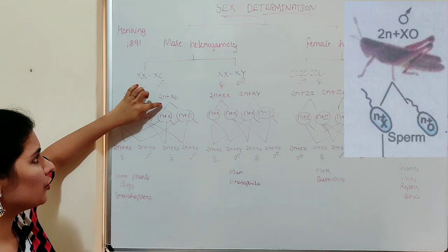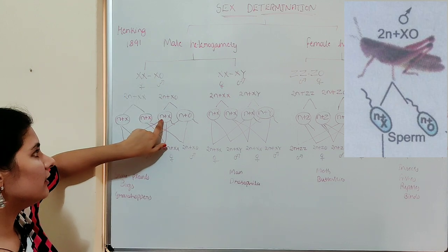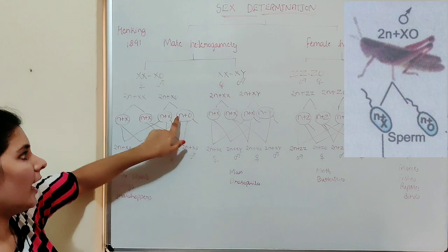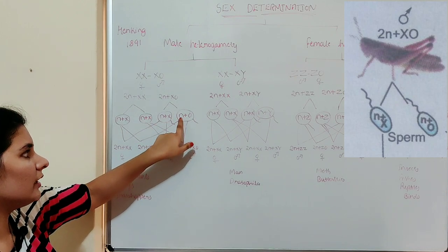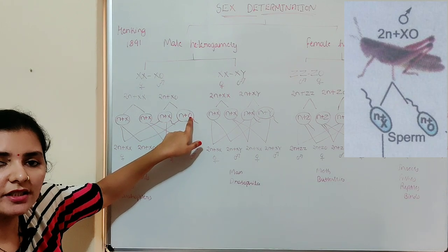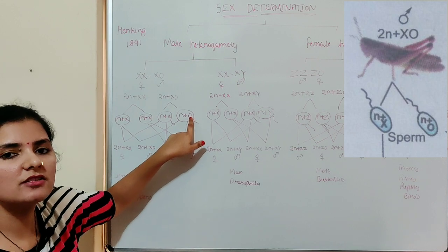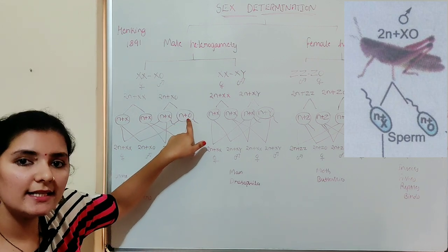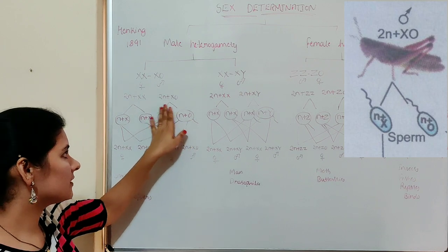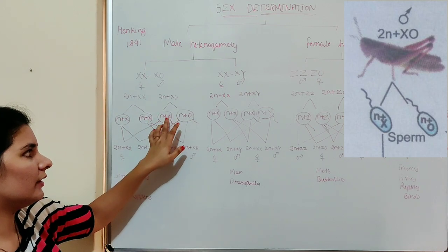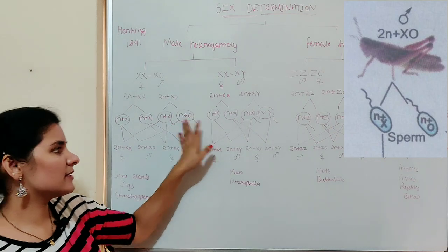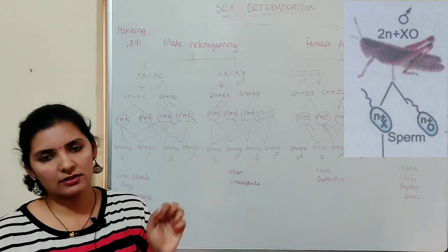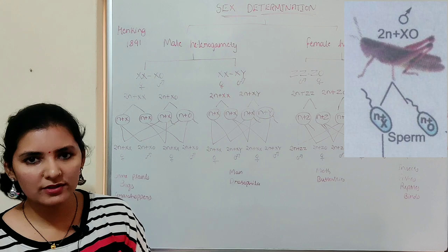The sperm produced by the male will either have N + X (one sex chromosome) or N + 0, where 0 refers to the absence of a sex chromosome. So 50% of the sperm produced will carry the X chromosome and 50% will have no sex chromosome.